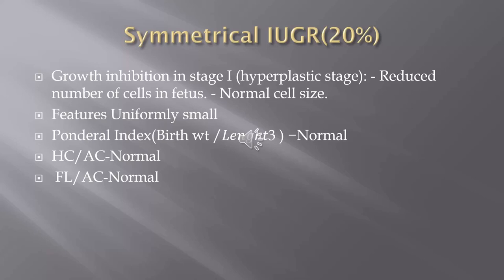Symmetric IUGR — the 20 percent type — involves growth inhibition in Stage 1, the hyperplastic stage, leading to a reduced number of cells with normal cell size. Features of the baby are uniformly small: normal ponderal index, normal head circumference to abdominal circumference ratio, and normal femur length in relation to abdominal circumference. All parts are small but in the same proportion.